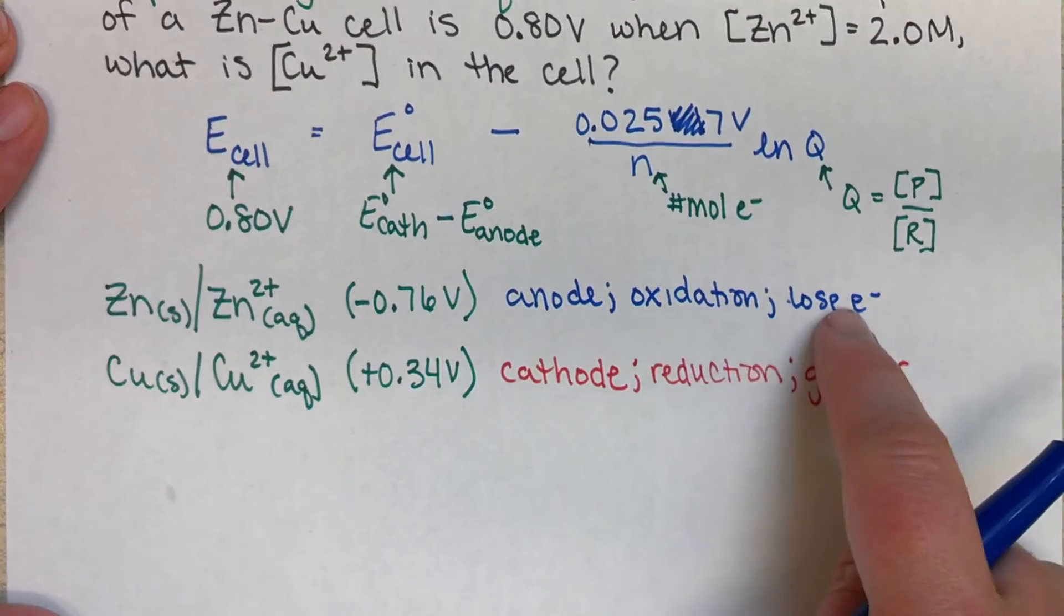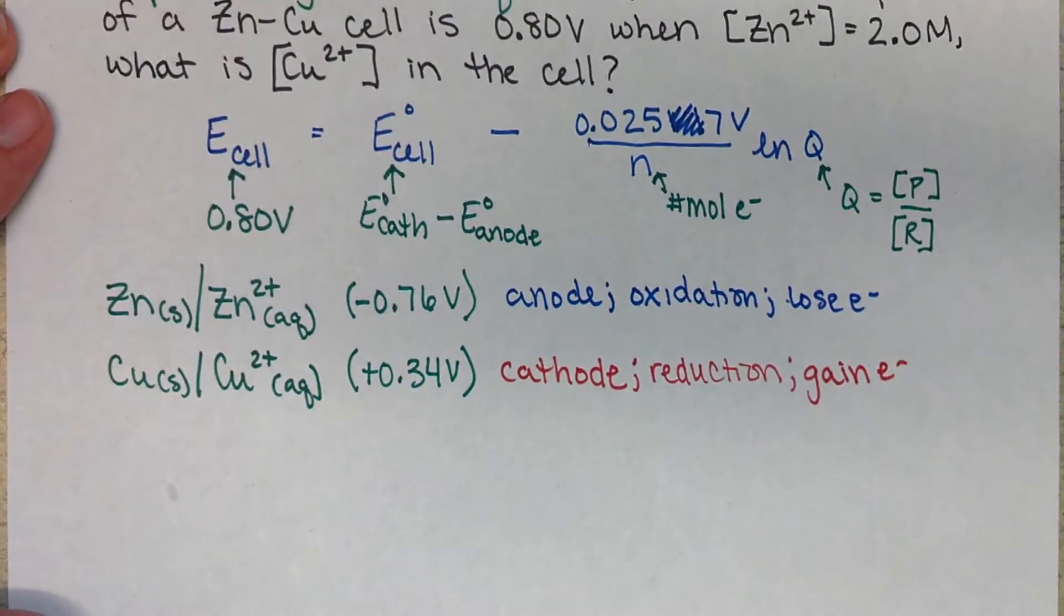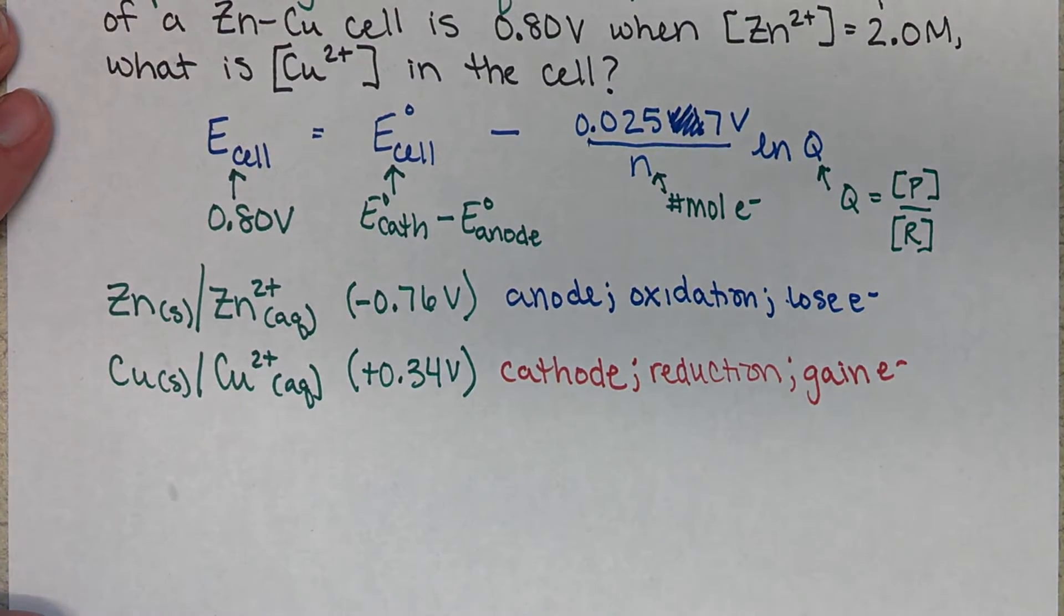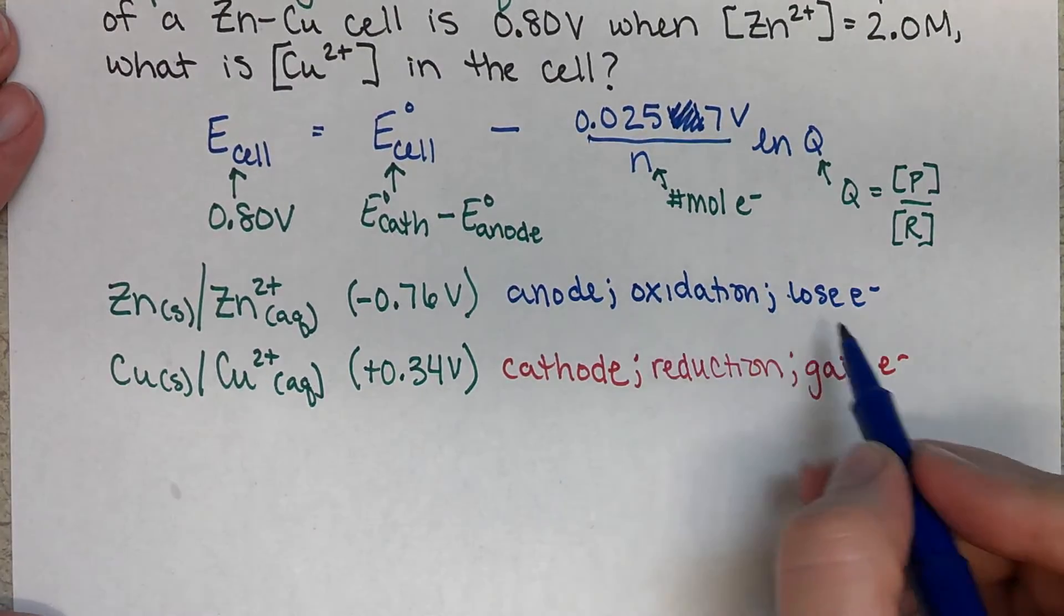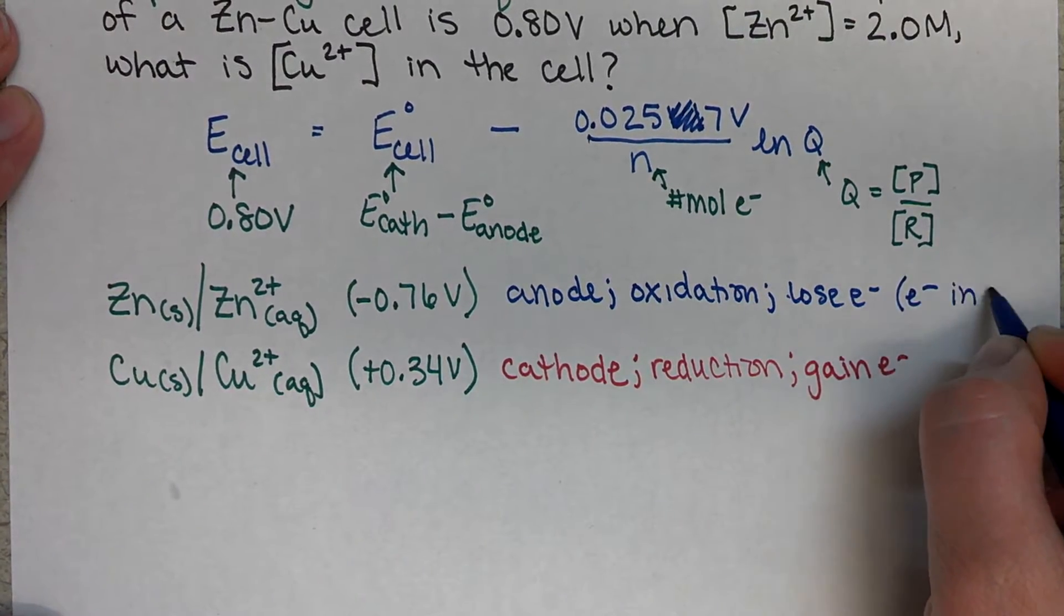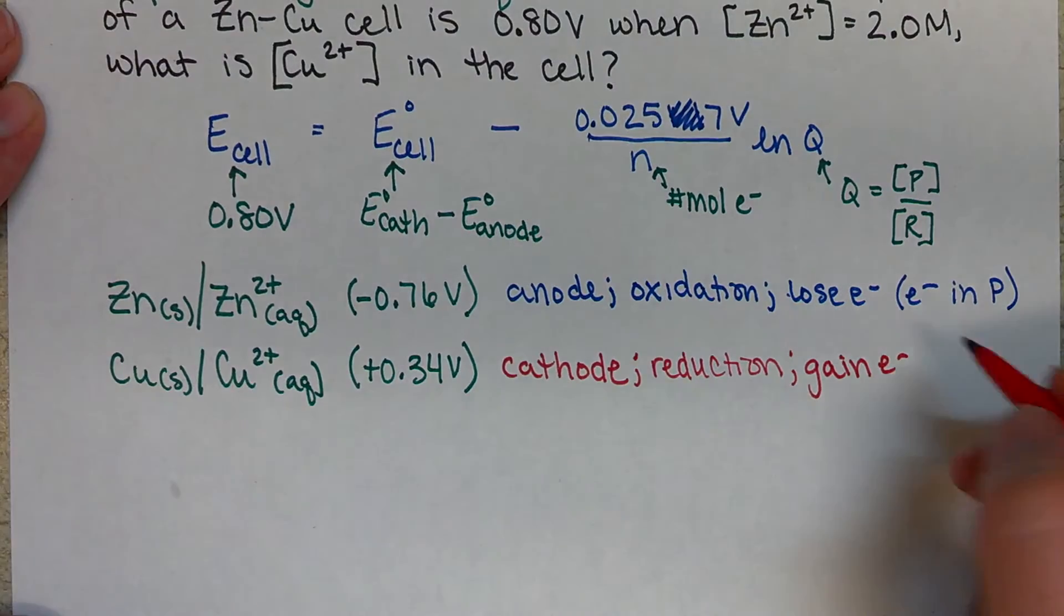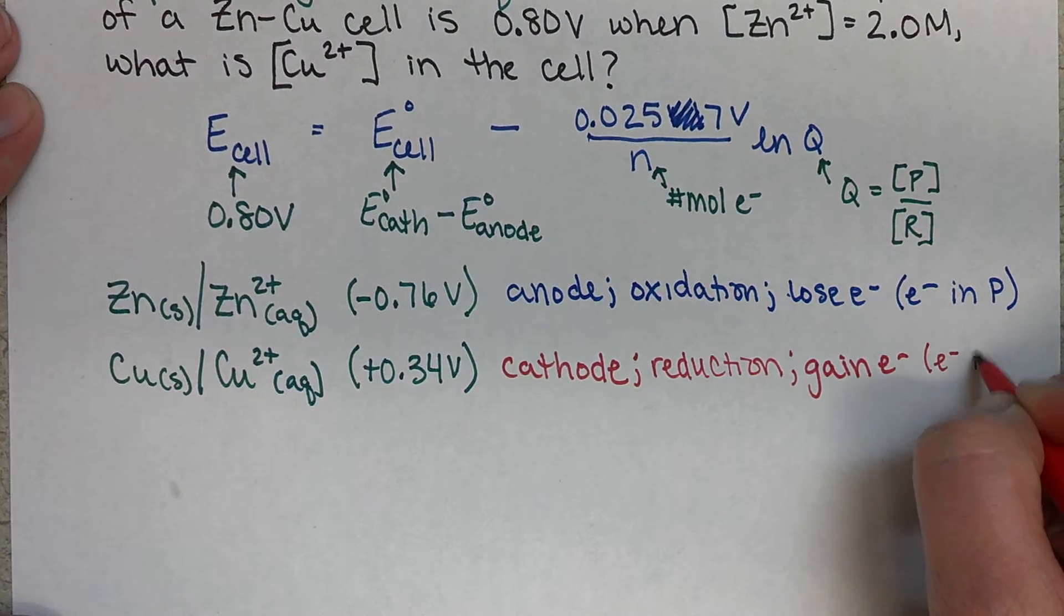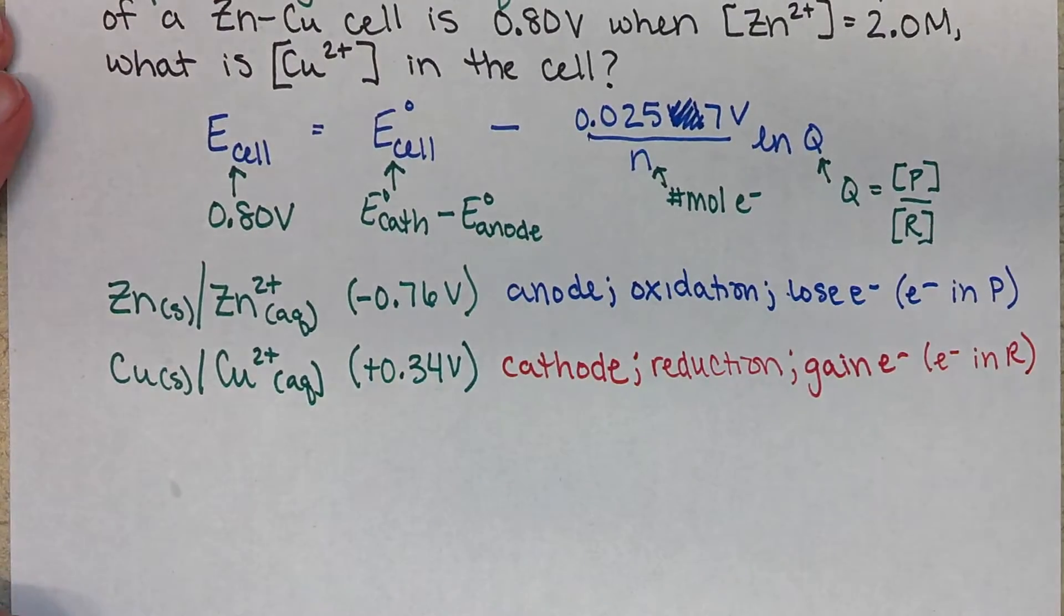So remember, I write all three of these things for each of my half-reactions when I'm working with redox equations. Anytime that I'm dealing with anything from this chapter, I want to list those three things. A fourth thing that might be helpful for some of you is that if you're losing electrons, that means your electrons are going to show up in the products. If you're gaining electrons, that means your electrons are going to be in the reactants. So that might be helpful for some of you.